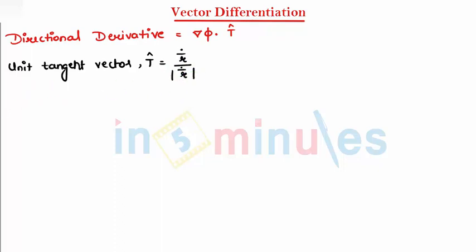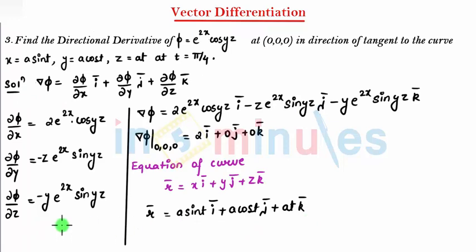I have r which I wrote here. r is given by this. Let's find r bar dot here. My r bar dot is a cos t i bar, that is just differentiation, minus a sin t j bar, and last is a k bar.